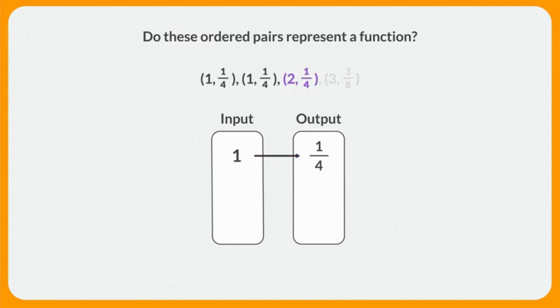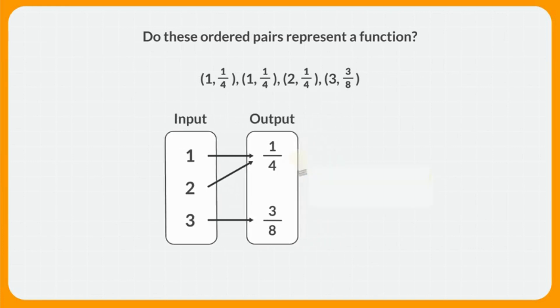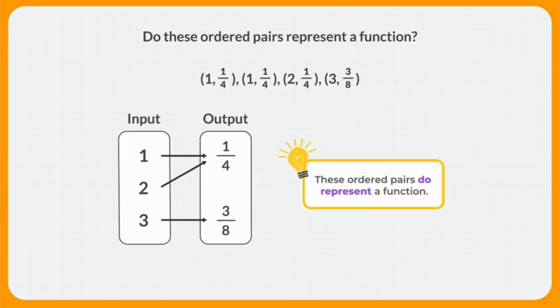We'll add this point next — an input of 2 and another output of 1 fourth. Does this map still show a function? Both of the inputs on the map each have one consistent output, so this is still showing a function. It's okay that the output is the same for both. Now we'll add this last point to our map. Now that we've shown all 4 points, every input on the map has just one output, so this map still shows a function. So these ordered pairs do show a function.